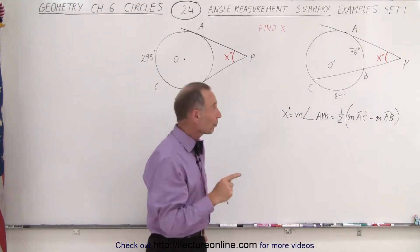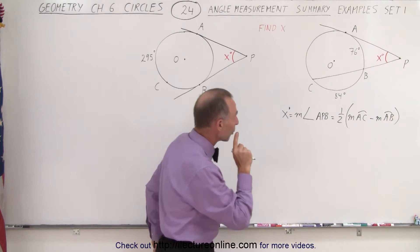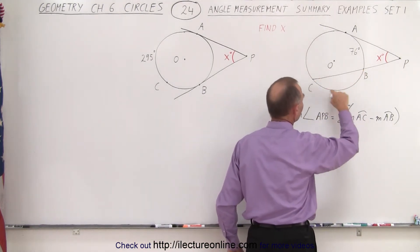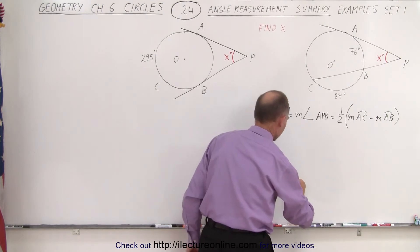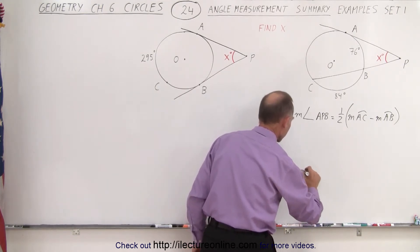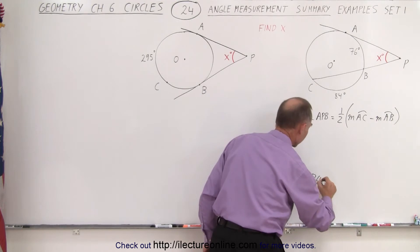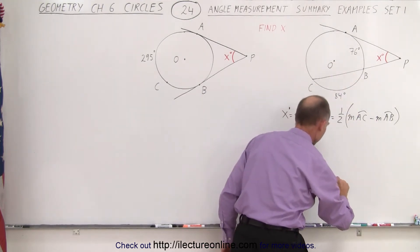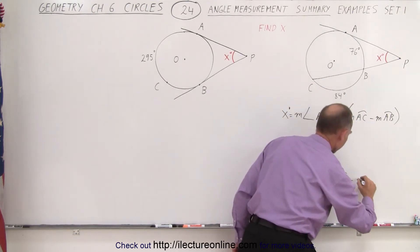Now we know the measure from A to B, but we don't know the measure from A to C. However, we are given the measure of the arc length from C to B. So what we can say is that the measure from A to C is equal to a full circle, 360 degrees, minus the measure from A to B, minus the measure from C to B.